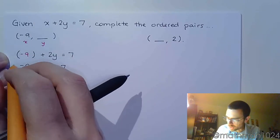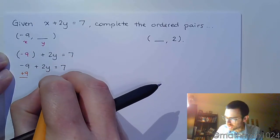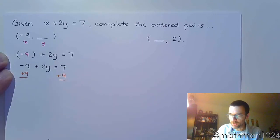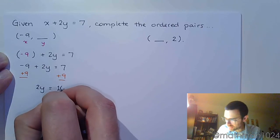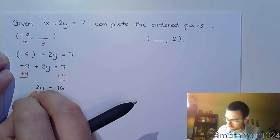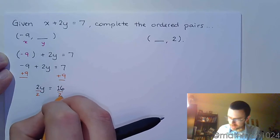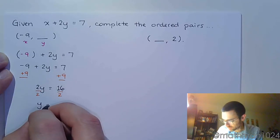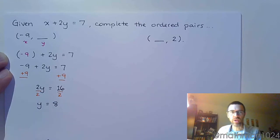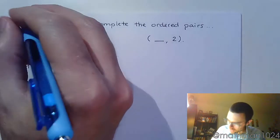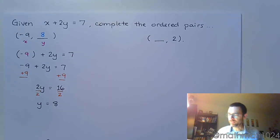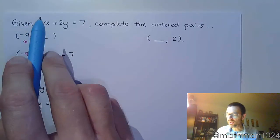Solve this for y by first adding 9 to both sides, just like you would solve any other linear equation. So 2y is equal to 16, which means that y is equal to 8. We're going to complete this ordered pair by writing 8, so the ordered pair of negative 9 comma 8 is a solution.